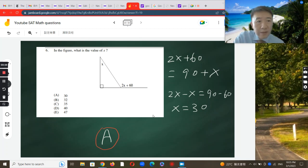We need to know that the exterior angle here is the sum of the other two angles. So 2x plus 60 is the sum of the other two, which is 90 plus x, because this is the right angle.